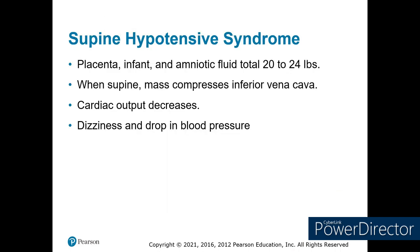We also have to worry about supine hypotensive syndrome. The placenta, infant, and amniotic fluid weigh about 20 to 25 pounds. When the patient is lying supine, this weight compresses the inferior vena cava, decreasing cardiac output and causing a drop in blood pressure. This is simple to fix pre-hospital — just prop up the right side of the patient to shift the uterus off the vena cava.